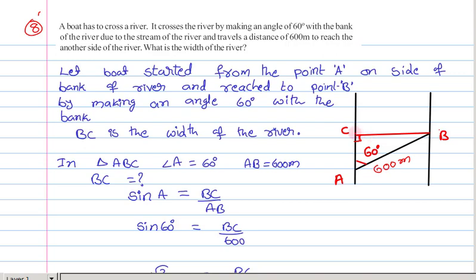So here we get a right angle triangle. Triangle ABC is a right angle triangle in which angle C is 90 degrees and angle A is 60 degrees. With respect to this 60 degrees, we know the hypotenuse and we need to find out the width of the river, that is the base. That means we need to find out the opposite side.